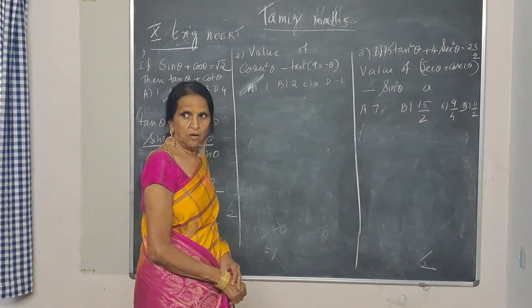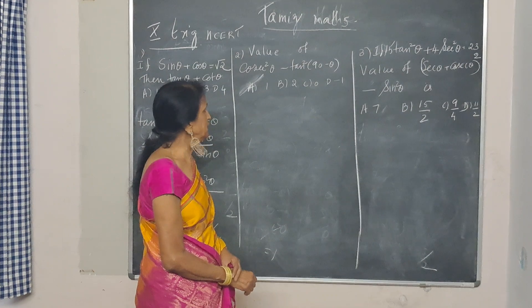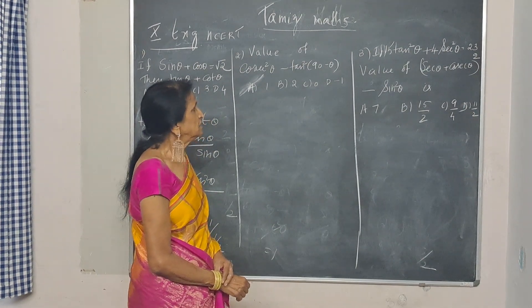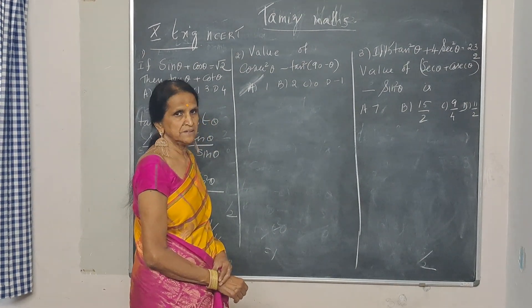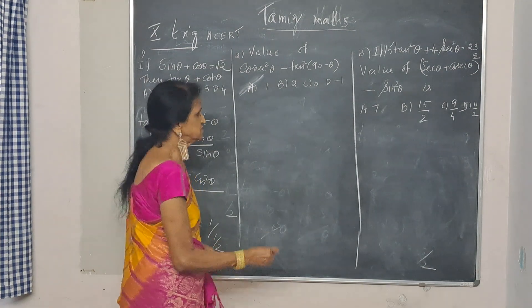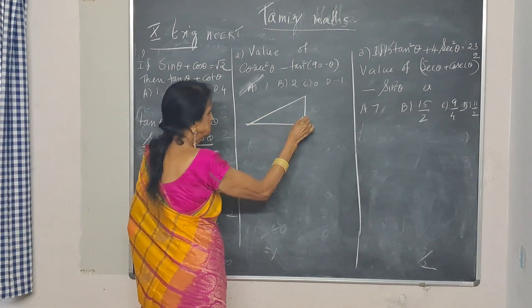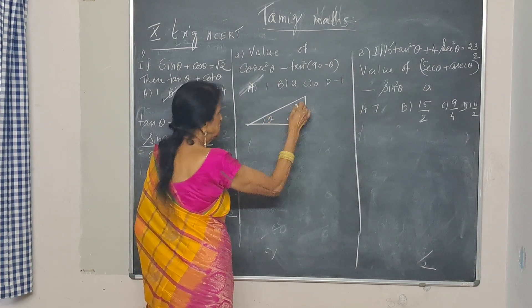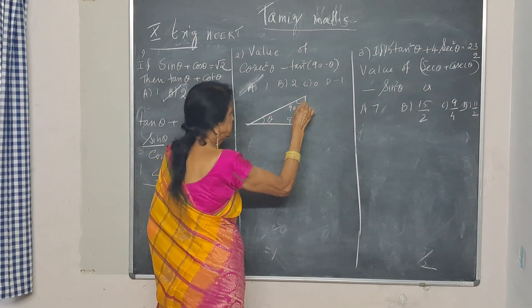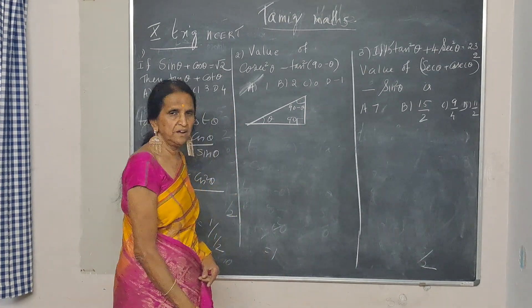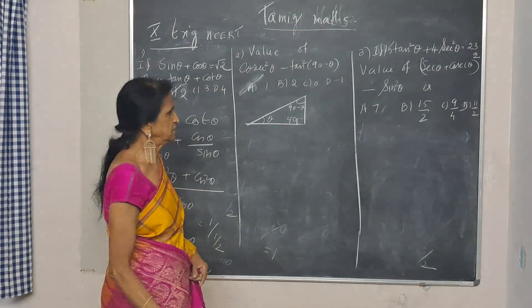Next, we go for: What's going to be the value of cosecant square theta minus tan square theta of the angle 90 minus theta? Tan square 90 minus theta. This is theta, so this will be 90 minus theta because all the angles of a triangle added together will be 180 degrees.